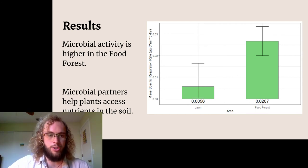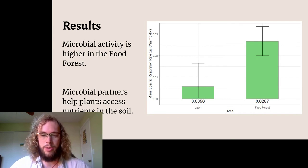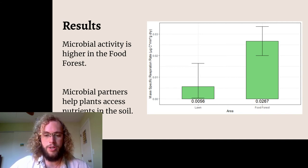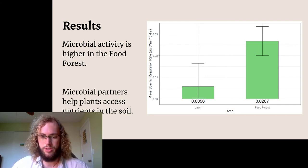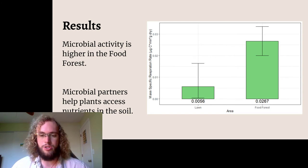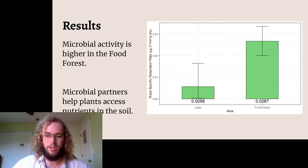I also found that microbial activity was higher in the food forest than it was in the lawn — about four times higher in fact. These microbial partners, as I mentioned earlier, are quite important in assisting plants to access the different nutrients that are present in soils. This upper layer that I measured is shared between both the lawn and the food forest, so it can serve as a direct comparison to the two different management styles applied when maintaining the lawn or maintaining the food forest.